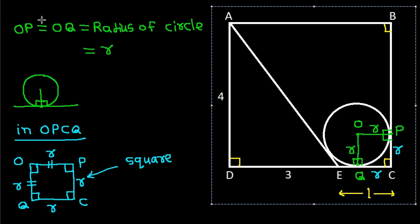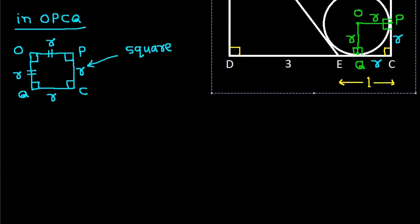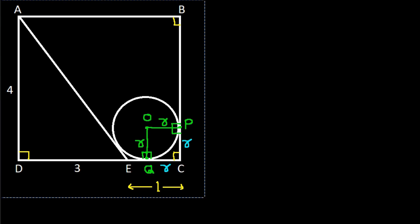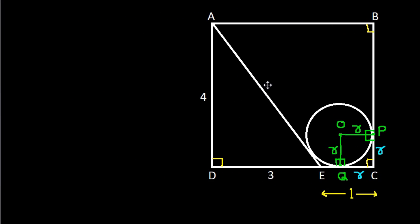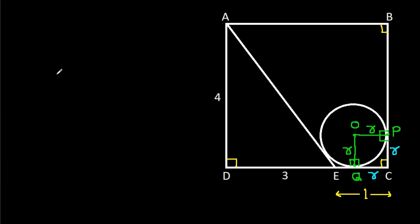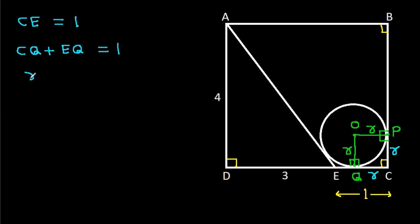Now, we have CE is 1. And CE is CQ plus EQ, which is 1. And CQ is R, so R plus EQ equals 1. Therefore EQ will be 1 minus R.